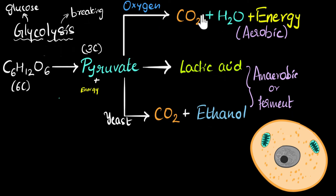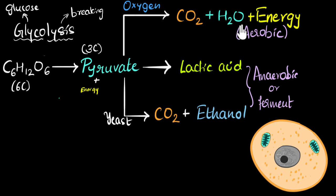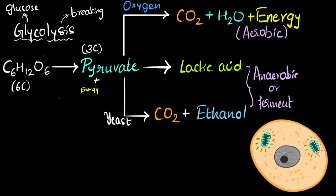If we want aerobic respiration, that happens inside the mitochondria. Once glycolysis happens in the cytoplasm, the pyruvate has to enter into the mitochondria, and oxygen also has to enter the mitochondria — that's where the reaction takes place. The mitochondria releases all that energy, which is why they say mitochondria is the powerhouse of the cell.